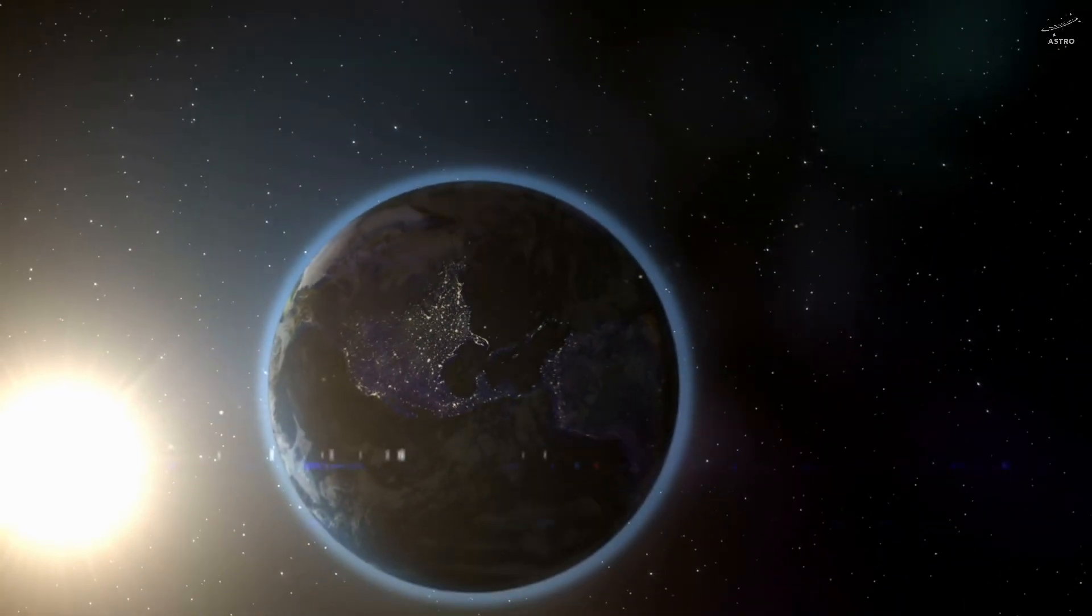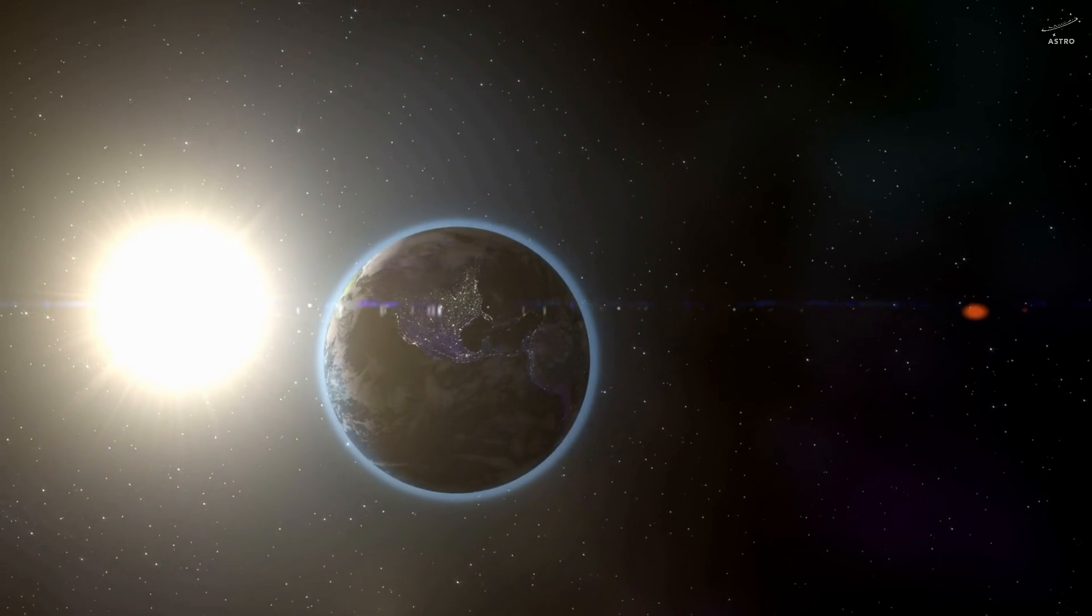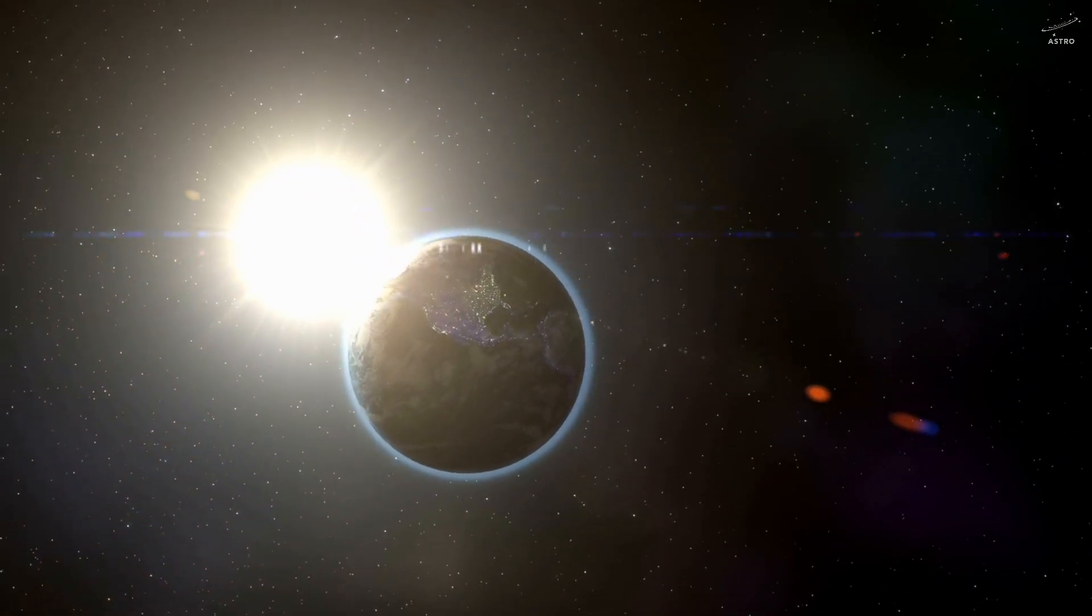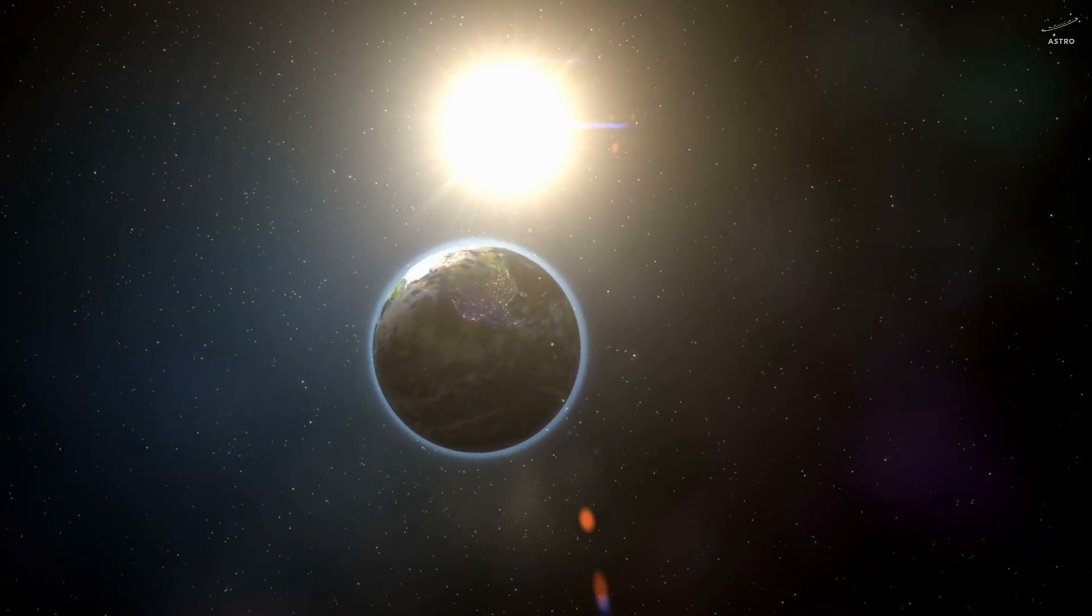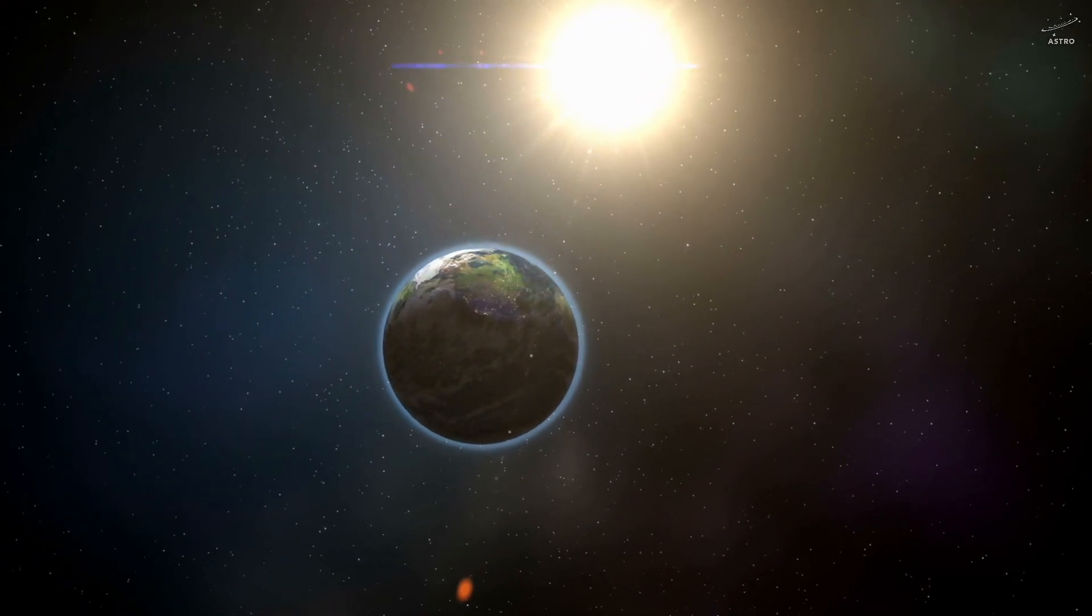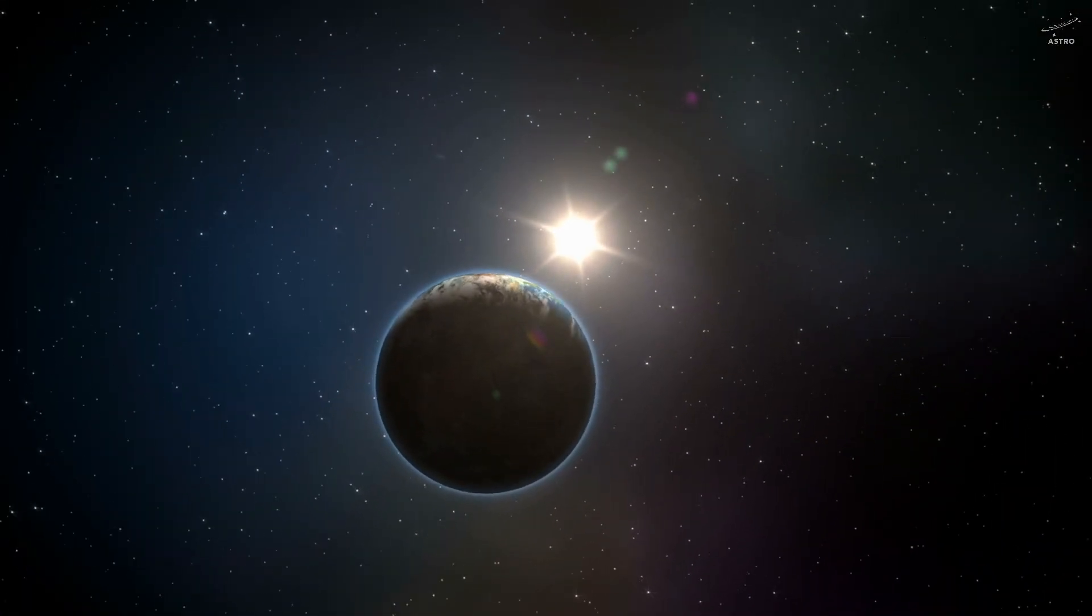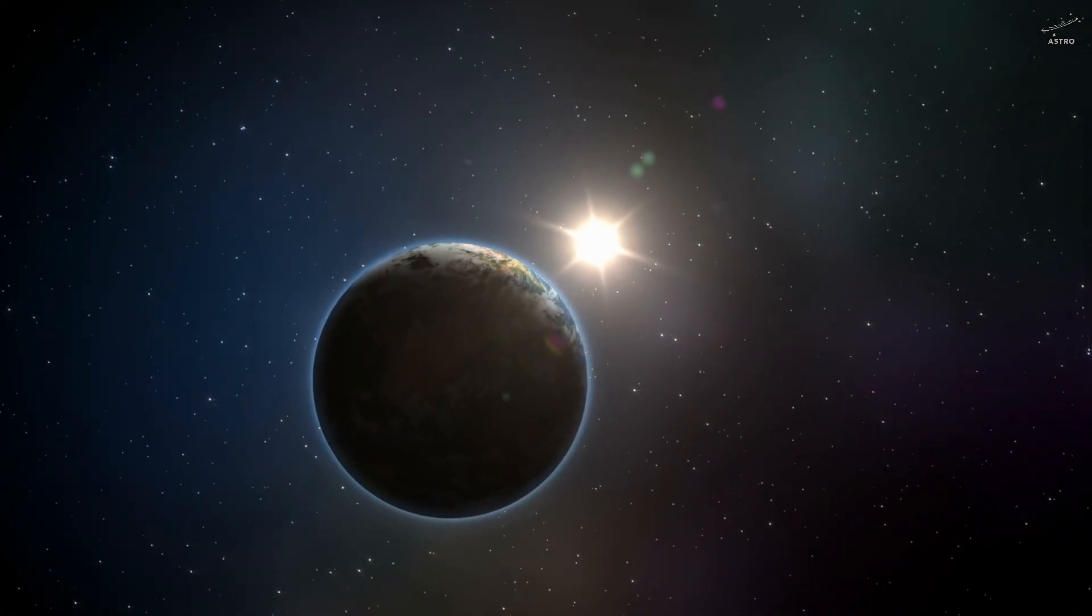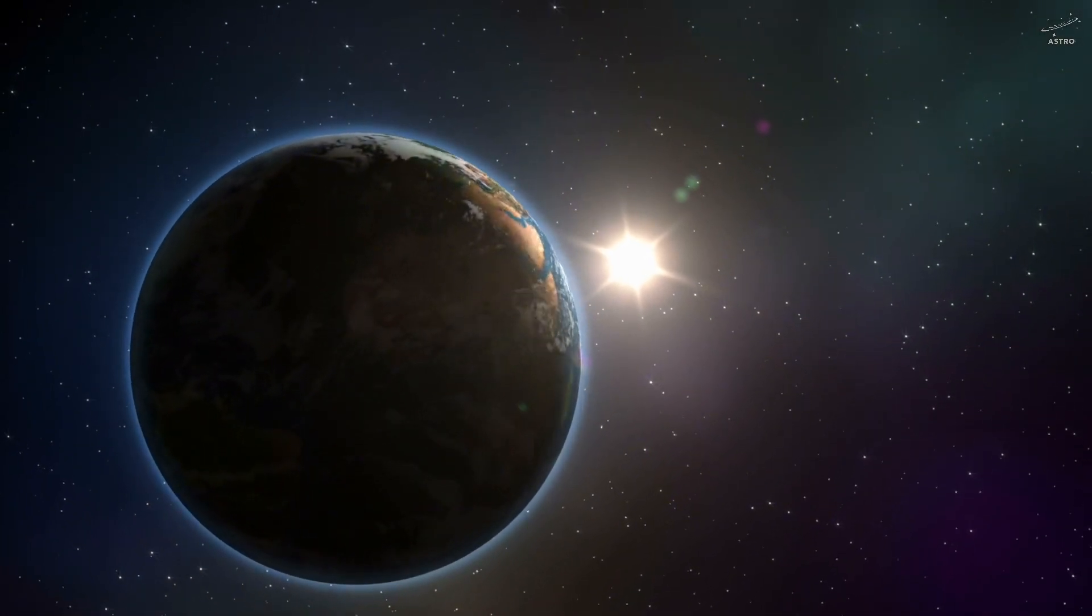And for Earth, this sets up a delicate, almost poetic paradox. The sun's pull is fading, pushing Earth outward. But at the same time, the sun itself is growing. Its outer layers swell, reaching farther with every passing age. It's like two dancers circling one another, moving closer, but never quite knowing who will make the final move.